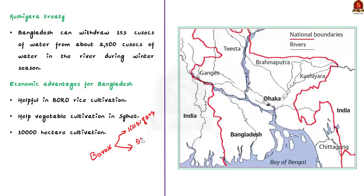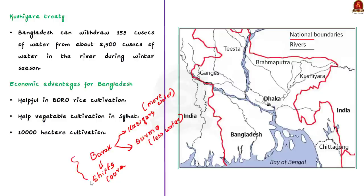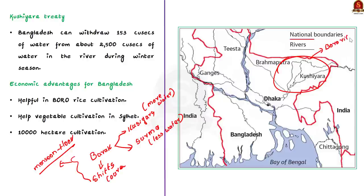The river Barak is notorious because it frequently shifts its path, causing most of its water to flow into the Kushiyara River and only some into the Surma River. Due to this, Bangladesh is heavily flooded during the monsoon season, but during the winter or lean season, the water in Kushiyara is very low. Bangladesh, mainly in the northeastern part, cultivates boro rice — rice cultivated in the winter season — which requires water supplied by the Kushiyara River. Since water levels are low during the lean season, boro rice cultivation is affected.